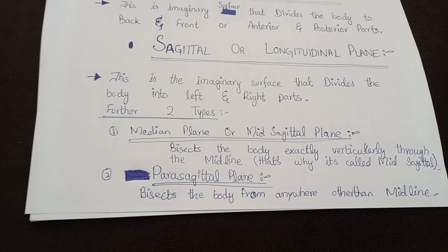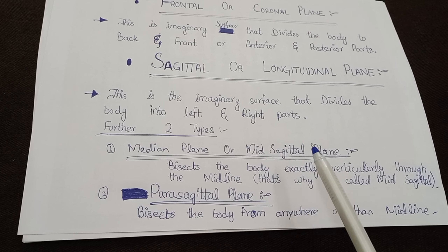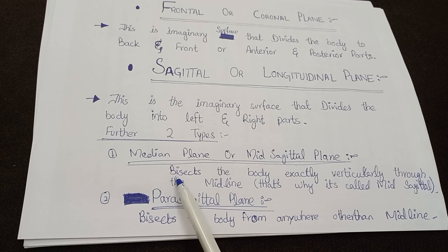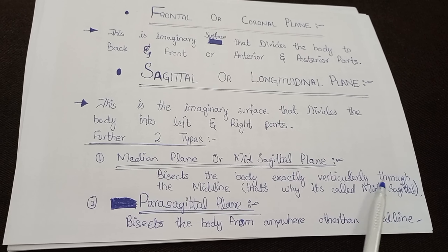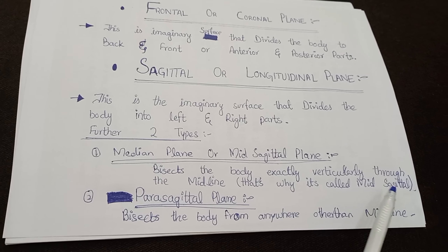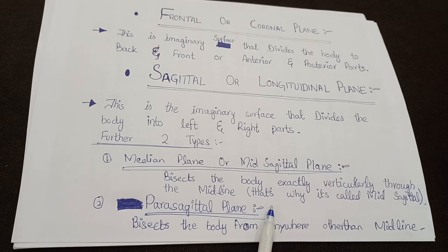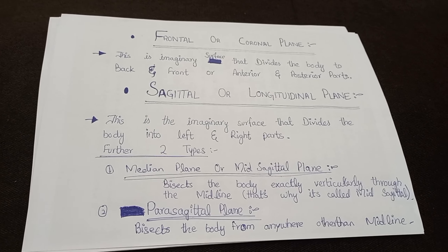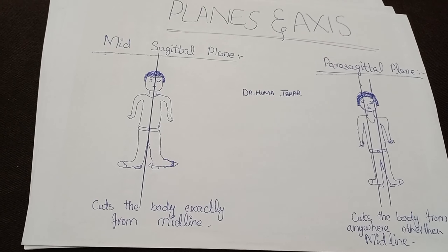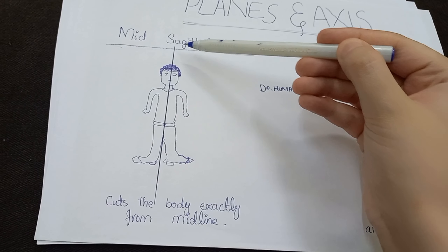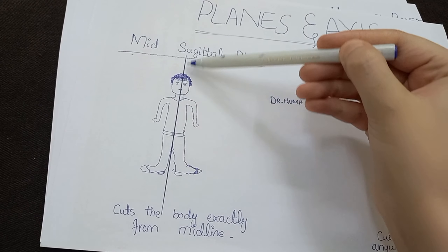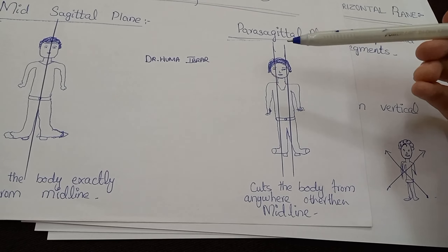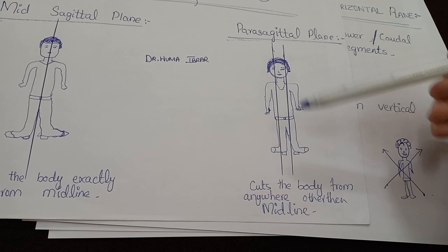As I mentioned earlier, the sagittal plane has two further types: the median plane or mid-sagittal plane, and the parasagittal plane. The median or mid-sagittal plane bisects the body exactly vertically through the midline — that's why it's called the mid-sagittal plane. The parasagittal plane bisects the body from anywhere other than the midline. Here you can see that the mid-sagittal plane cuts the body from exactly the midline, while the parasagittal plane cuts the body anywhere other than the midline.